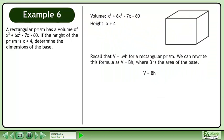Recall that volume equals length times width times height for a rectangular prism. We can rewrite this formula as v equals bh, where b is the area of the base.